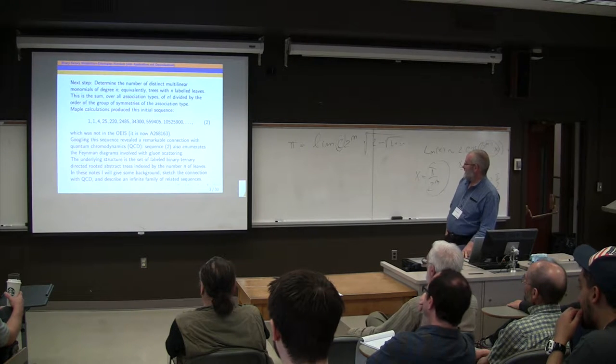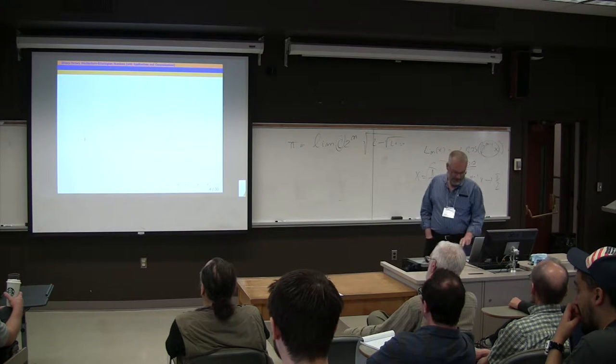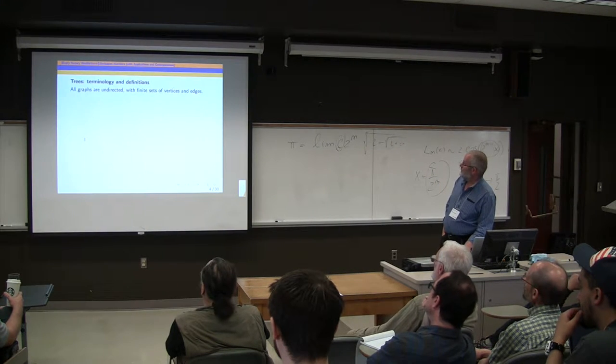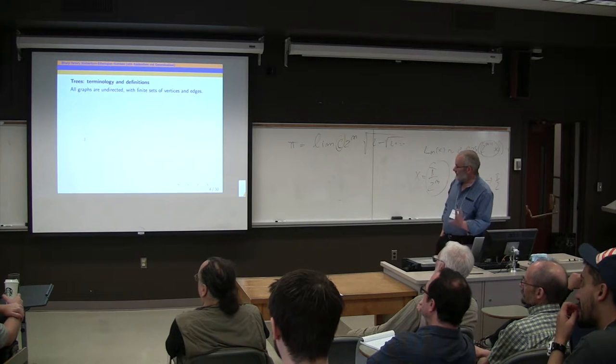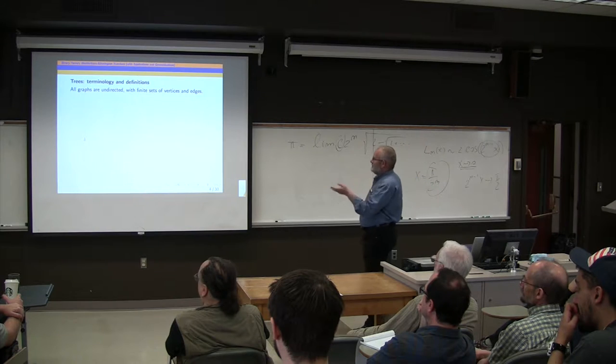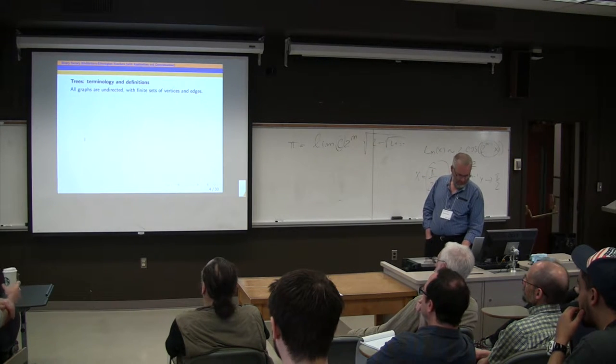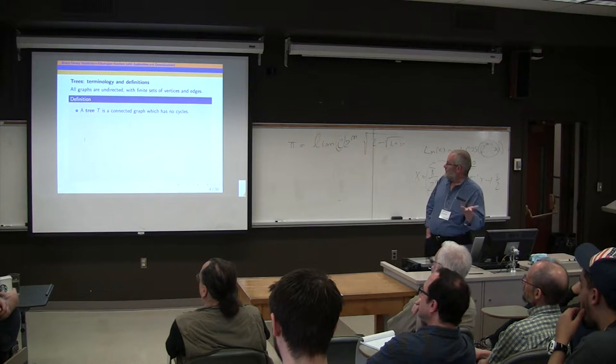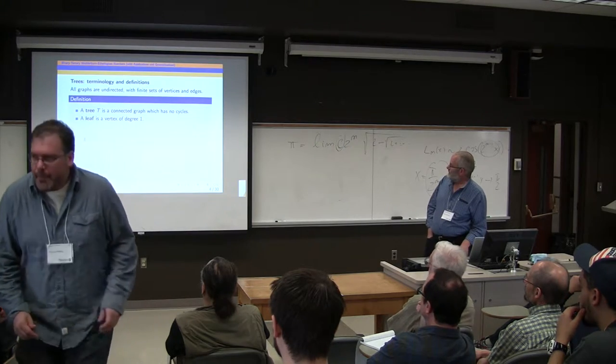So let me sketch the background and then go on and get to some related sequences. I need to set up some terminology about trees. All graphs are going to be undirected, although there might be a natural direction put on things in some cases. Finite sets of vertices and edges. So what's a tree? It's a connected graph with no cycles. A leaf is a vertex of degree one.